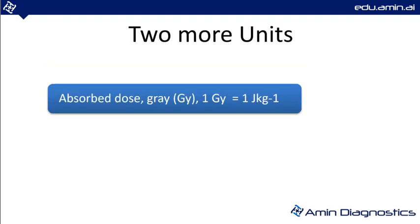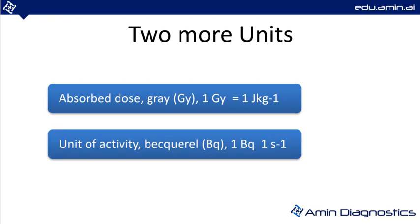The unit for absorbed dose, frequently used in radiation protection, is the gray, where one gray equals one joule per kilogram. The unit of activity or radioactivity is the becquerel, and one becquerel equals one disintegration per second. These are often expressed in megabecquerels.